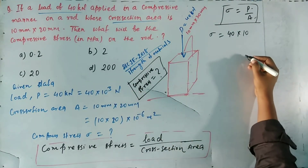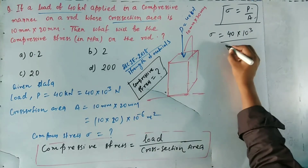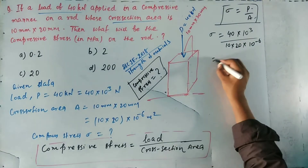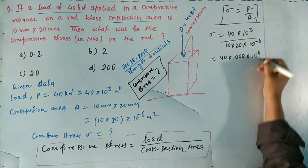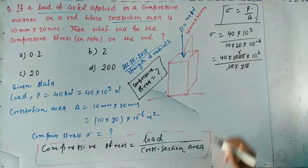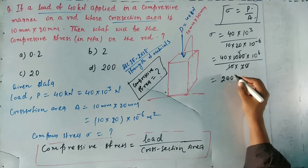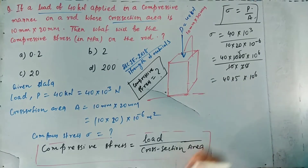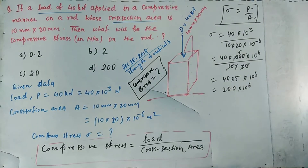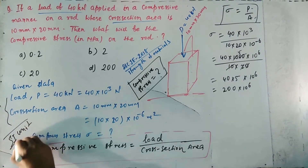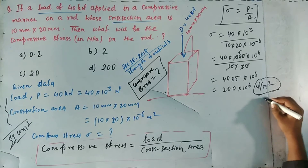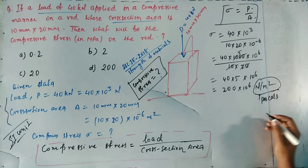Putting in the values, Sigma equals 40 × 10³ divided by (10 × 20 × 10⁻⁶). This simplifies to 40 × 1000 × 10⁶ divided by (10 × 20), which equals 40 × 5 × 10⁶ = 200 × 10⁶ N/m². Since Newton per meter square is called Pascals, Sigma equals 200 × 10⁶ Pascal.